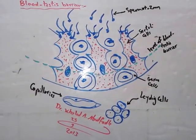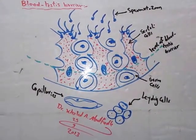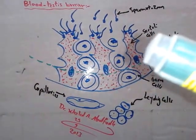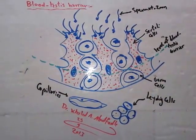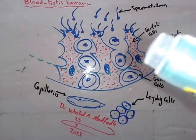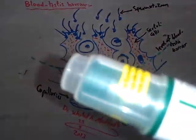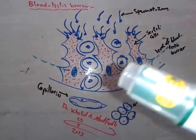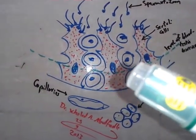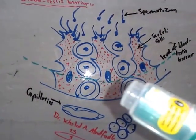Blood Testis Barrier is one of the major functions of Sertoli cells. The Blood Testis barrier is formed by tight junctions between adjacent Sertoli cells. The green dashed color represents the level of the blood Testis barrier.